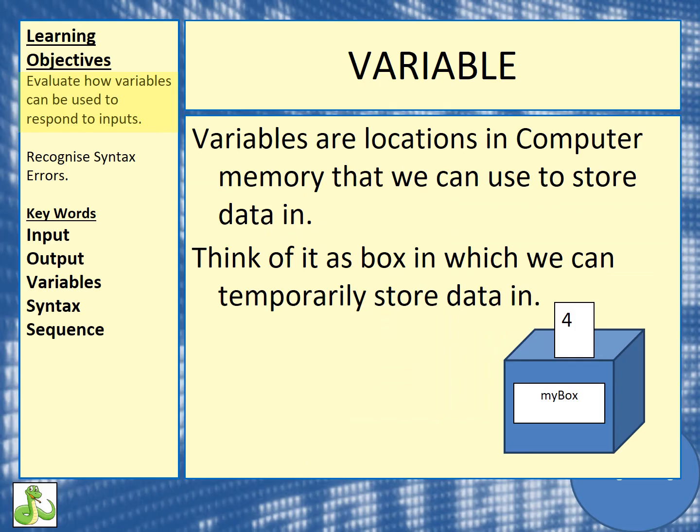When a computer is running, we store data of the programmes that are currently running in RAM — random access memory. A variable is a small location in RAM which allows us to save data. That data can change, so think of it like a box. You could store a number in a box and we could change that number.